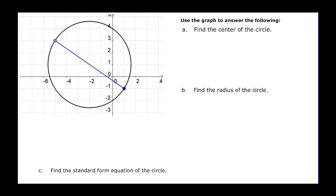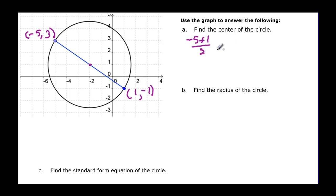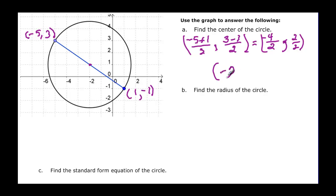Now we're going to use a graph to figure some of these things out. We want to know what the center of the circle is. Looking at the graph, we have the point negative five, three on one side, and the point one, negative one on the other side. The midpoint would be the center of the circle. So we take negative five plus one, divided by two, and three plus negative one, divided by two. That gives us negative four over two and two over two, so the center is negative two, one.